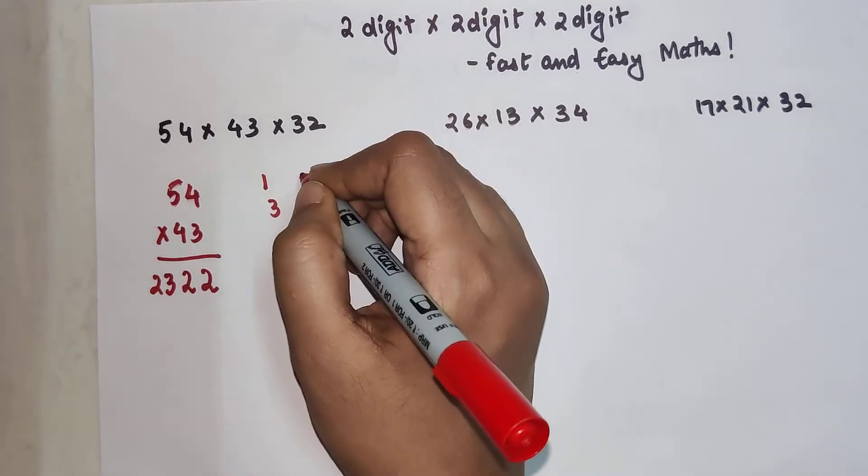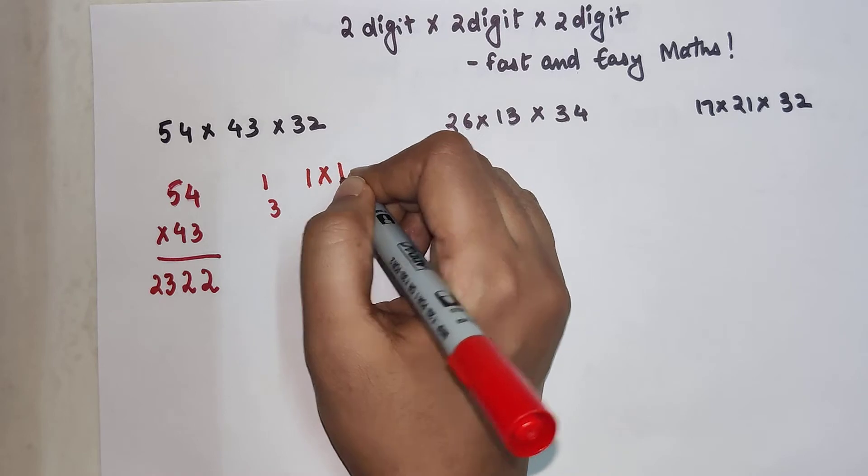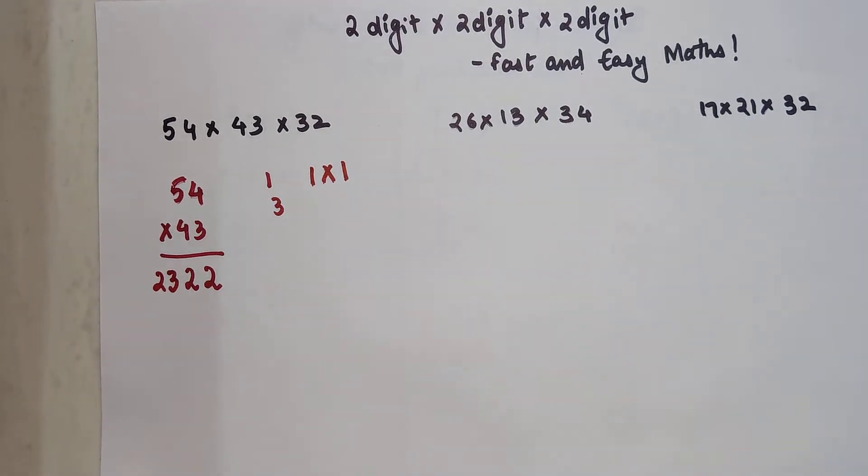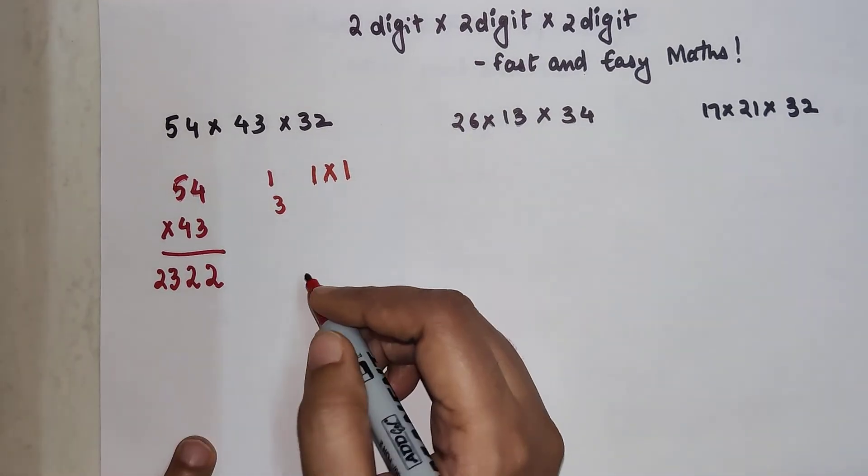So the sign over here is we do 1 cross and then 1. That is the trick to do multiplication of 2 digit into 2 digit.